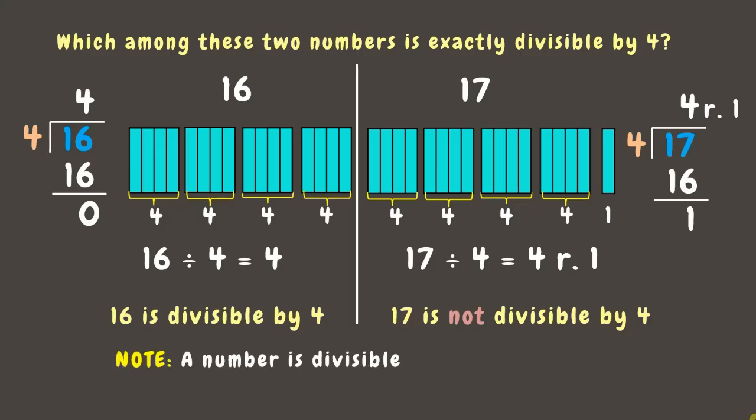Remember, a number is exactly divisible by another number if there is no remainder or any decimal value. There is also a divisibility rule that helps us determine more quickly whether a number is divisible by another number.